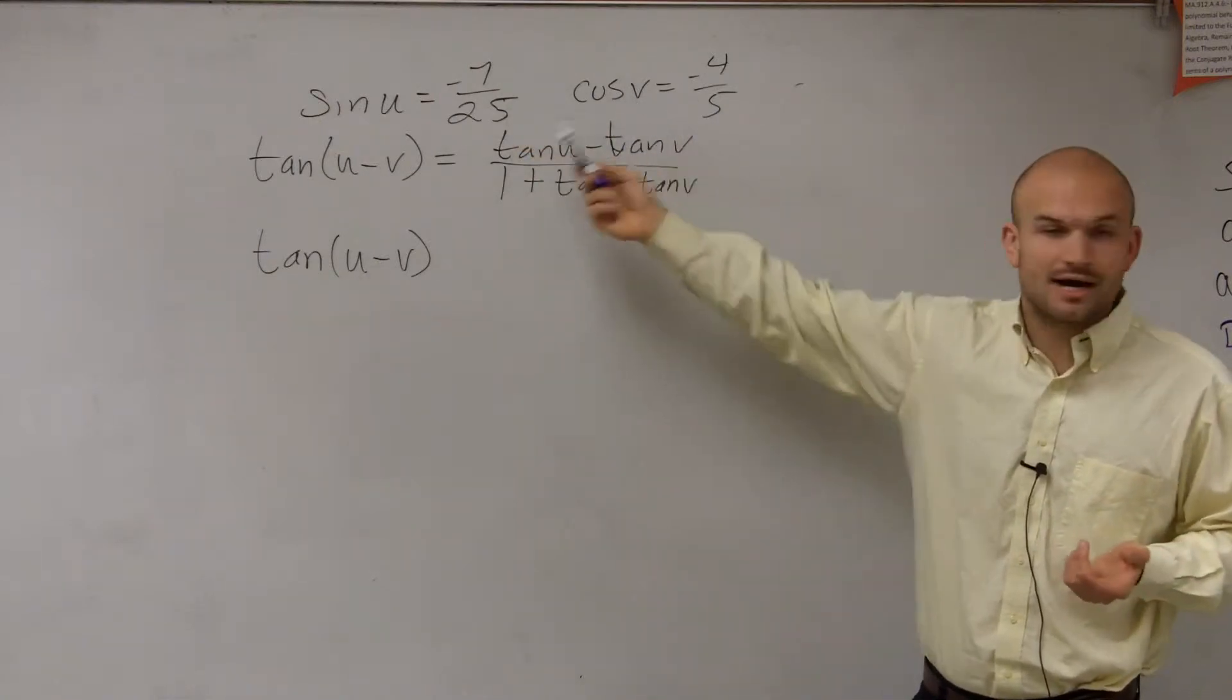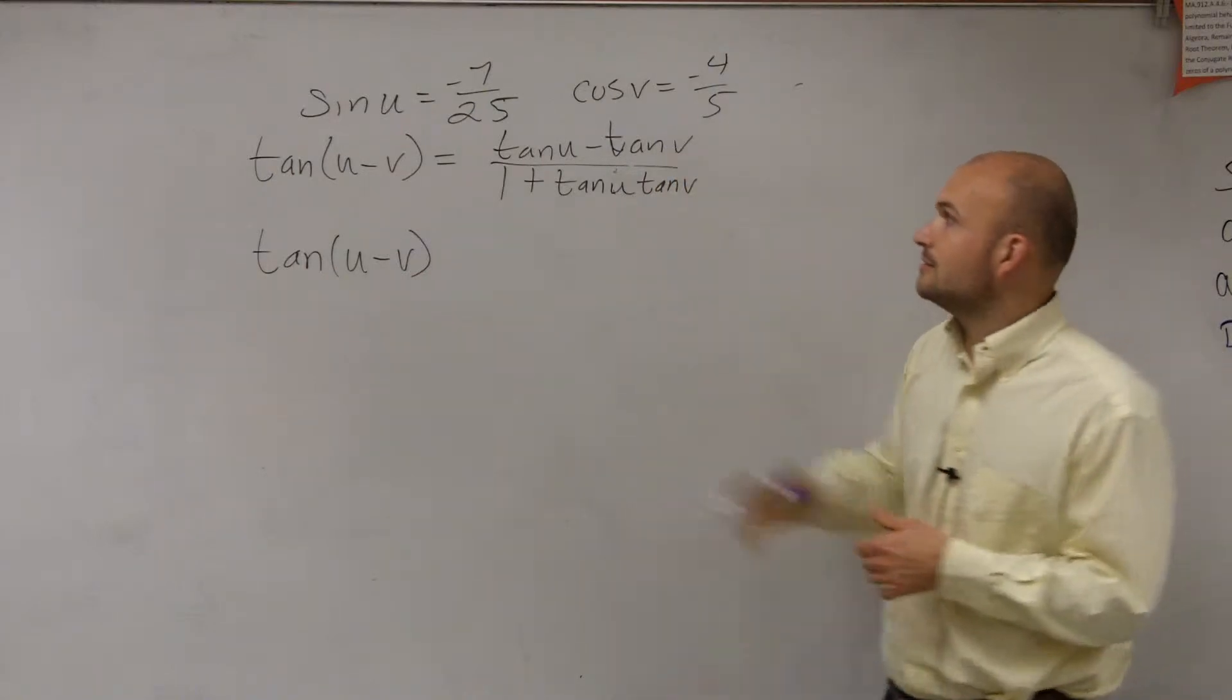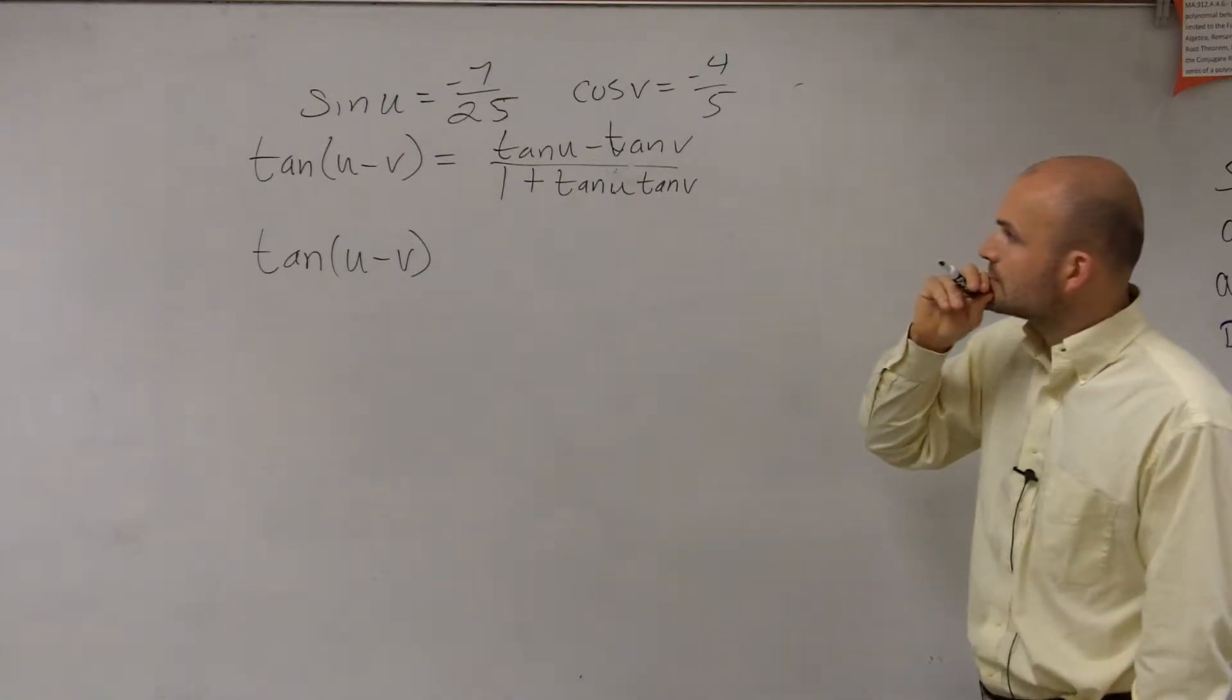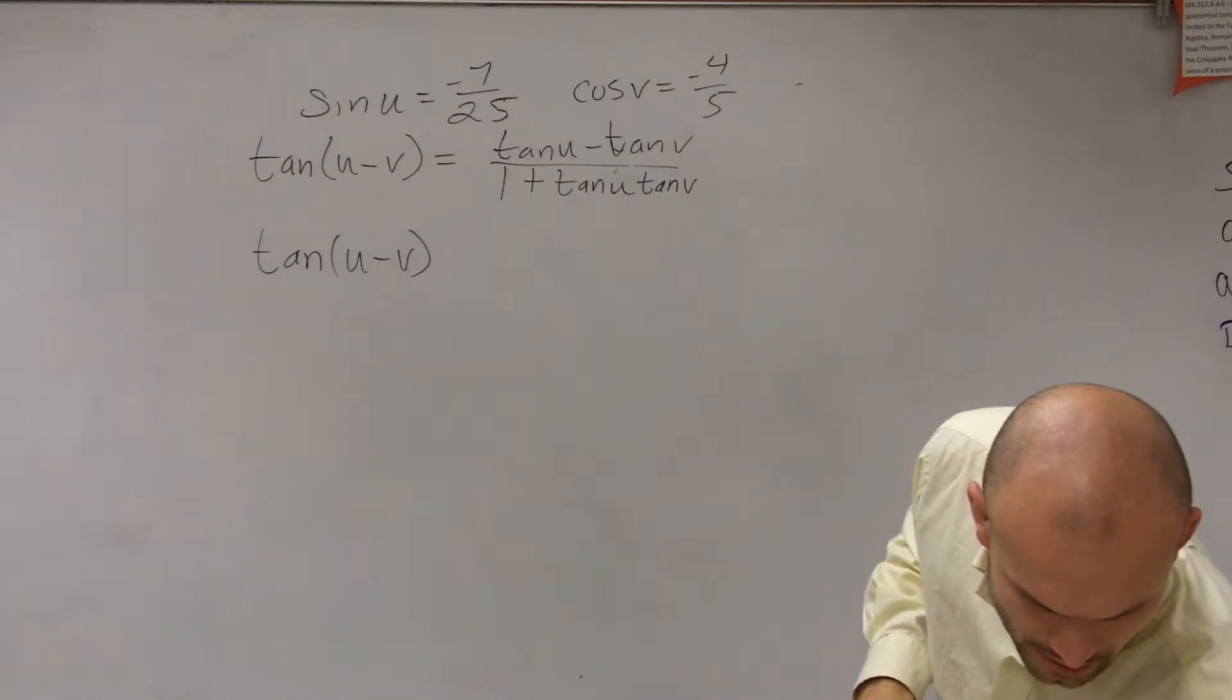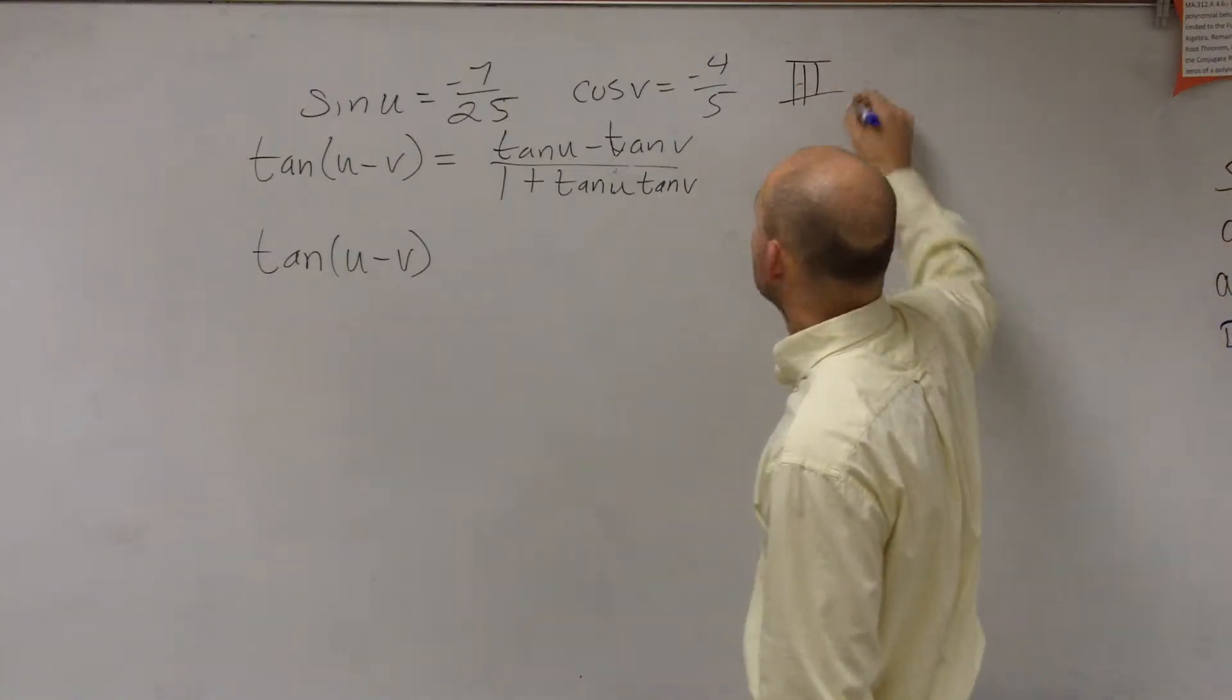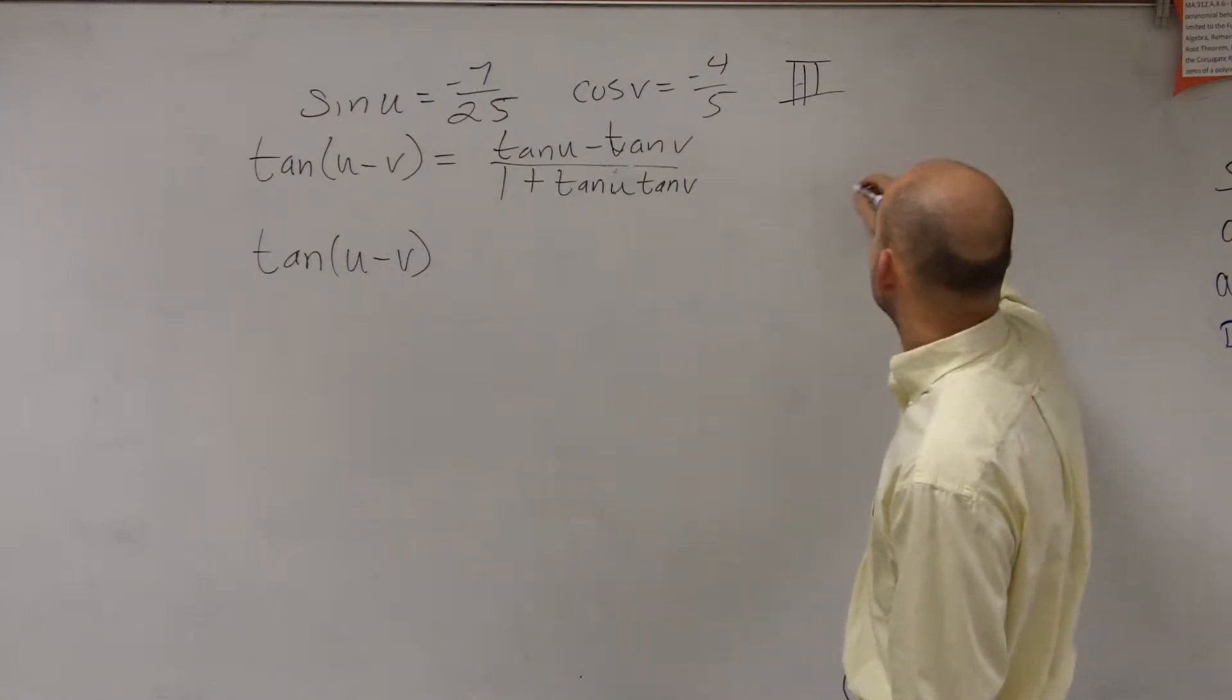Now, these are not on our unit circle, so we know that we have to create a triangle. So sine of u says negative 7 over 25. And I believe, was there a constraint? Yes, it says they're all in quadrant 3. So this problem has to be your angles are all dealing with quadrant 3. So therefore, I know my triangle for the first one.